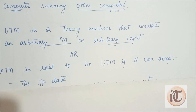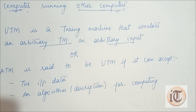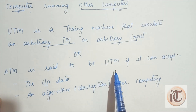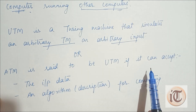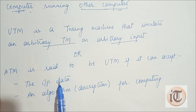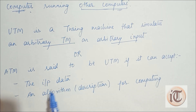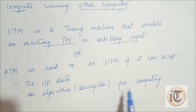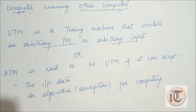In another definition, a Turing Machine is said to be a Universal Turing Machine if it can accept input data and an algorithm — the description of the Turing Machine — for the computing purpose.